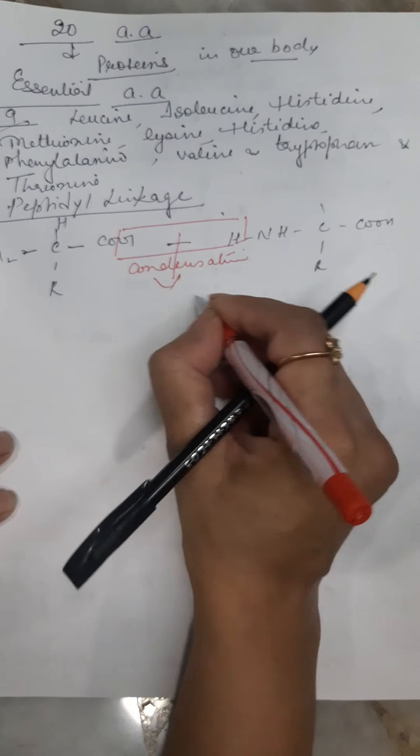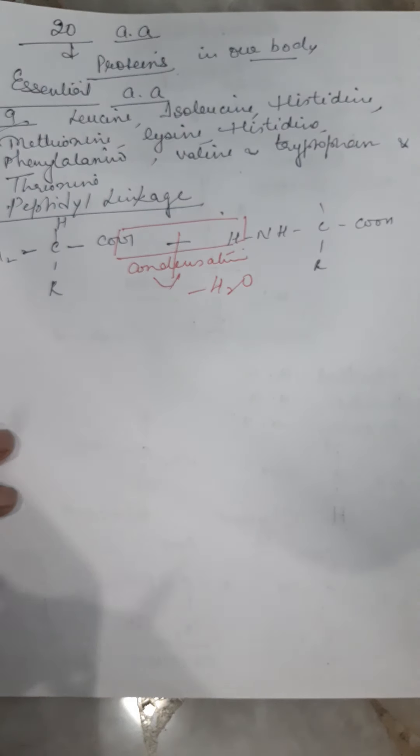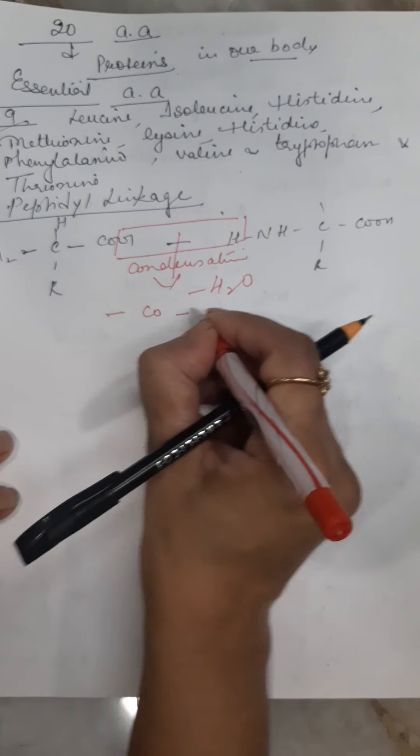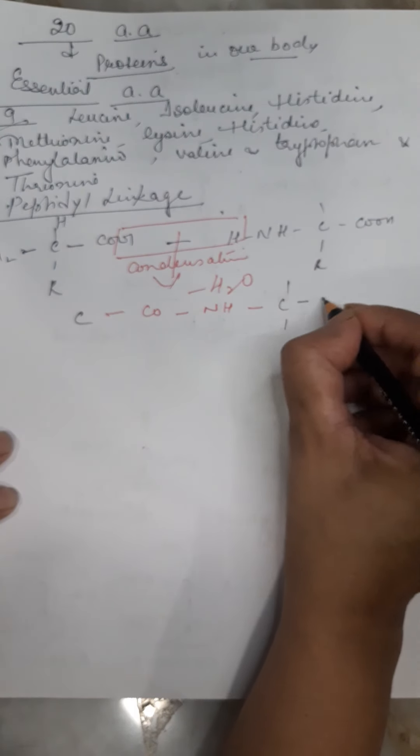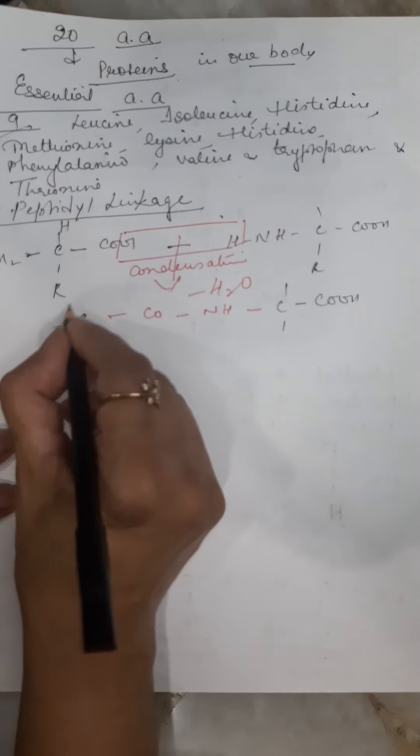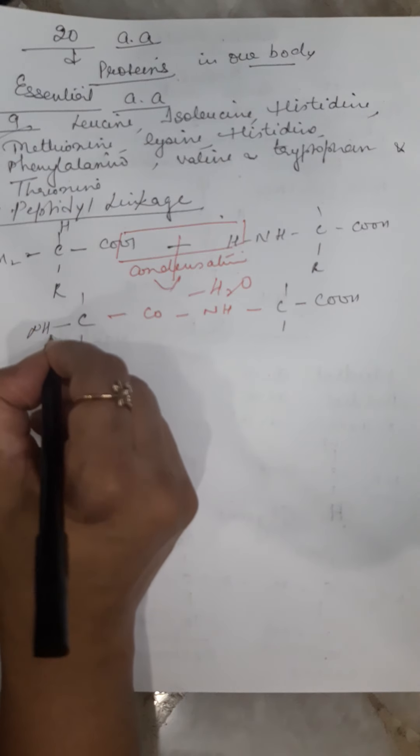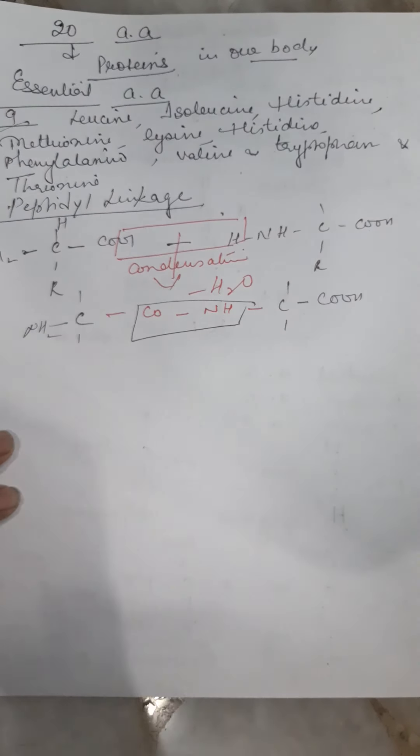The hydroxyl group of the carboxyl group and hydrogen of this amino group undergo condensation, and a water molecule is released. This linkage is formed. This linkage is called peptidyl linkage.